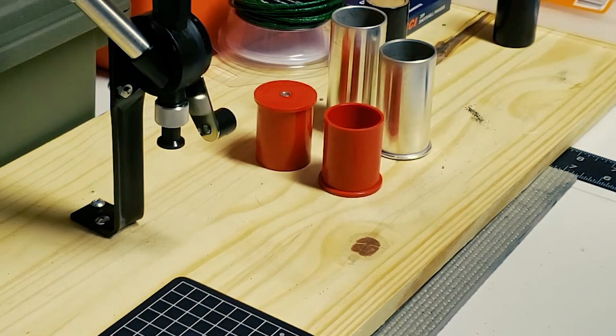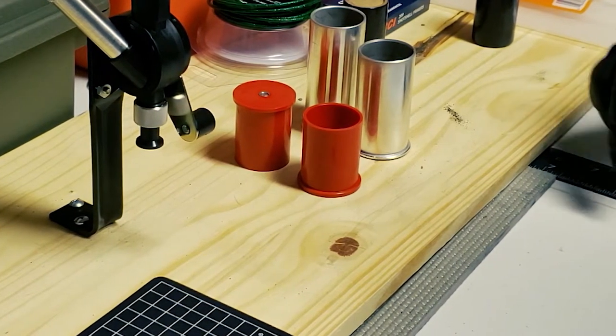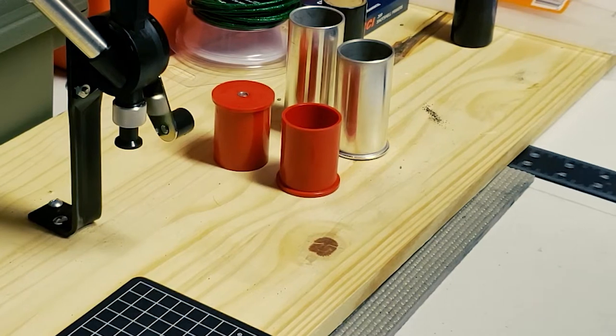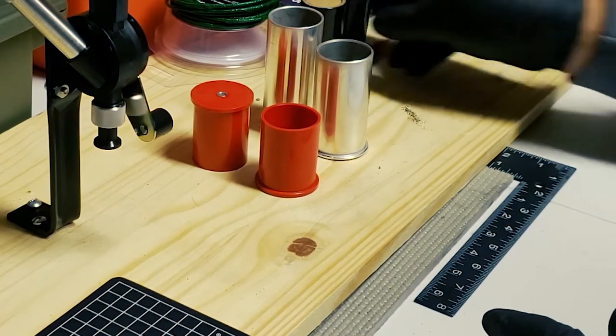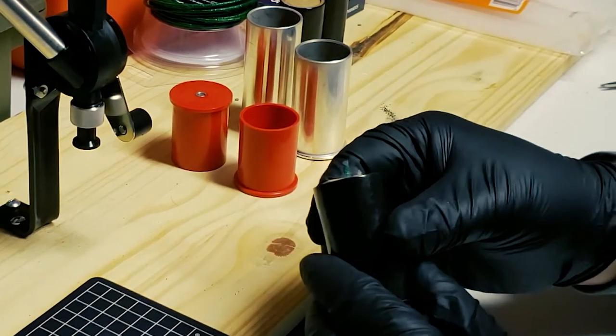This is done by using a utility knife to trim the fuse down to one fourth of an inch. But it's important that you cut it at a 45 degree angle.